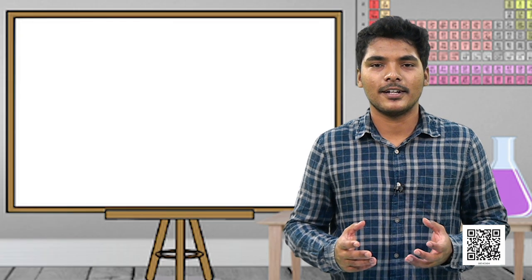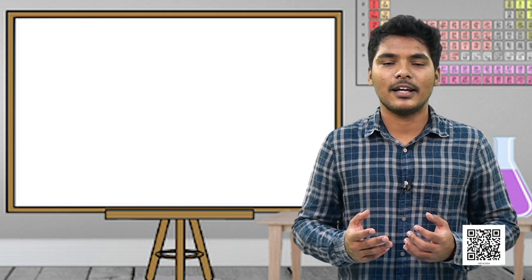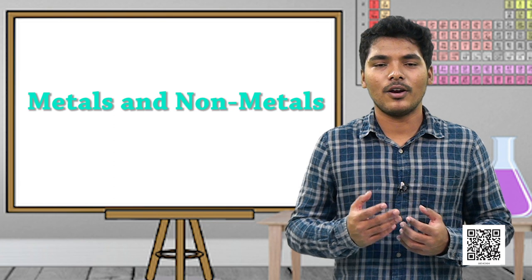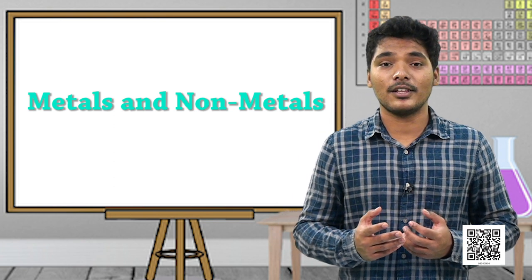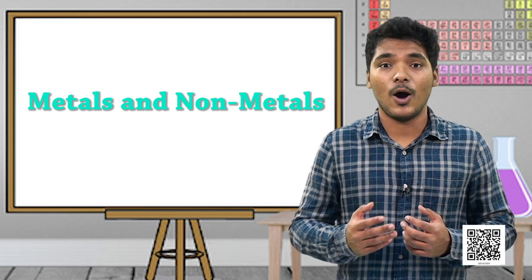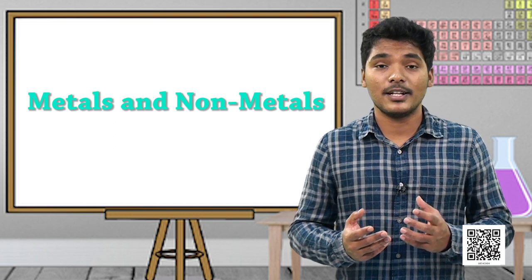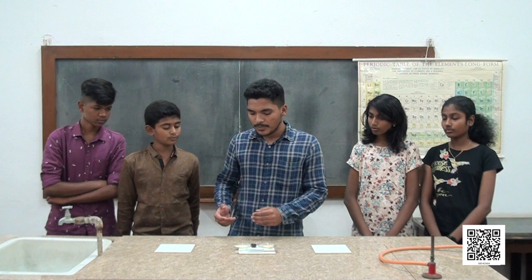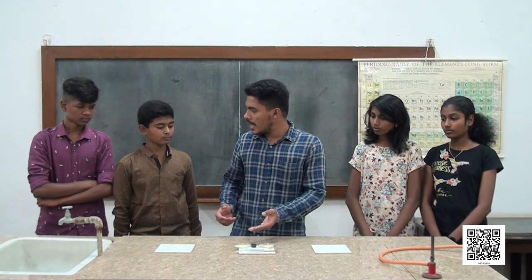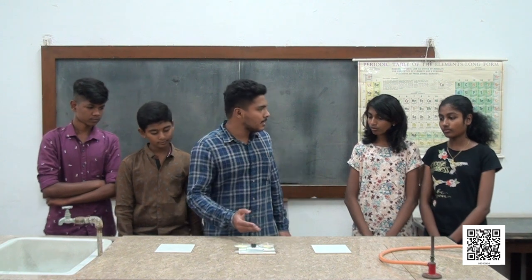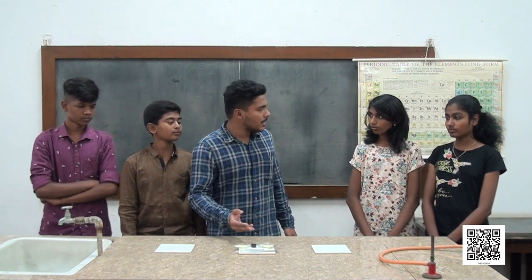Welcome children, today we are going to learn a new chapter called metals and non-metals — what are the properties, what are the reactions, what are the uses, and how they differ from each other. You have to categorize substances depending upon their dullness and softness, and also by their hardness and shininess.